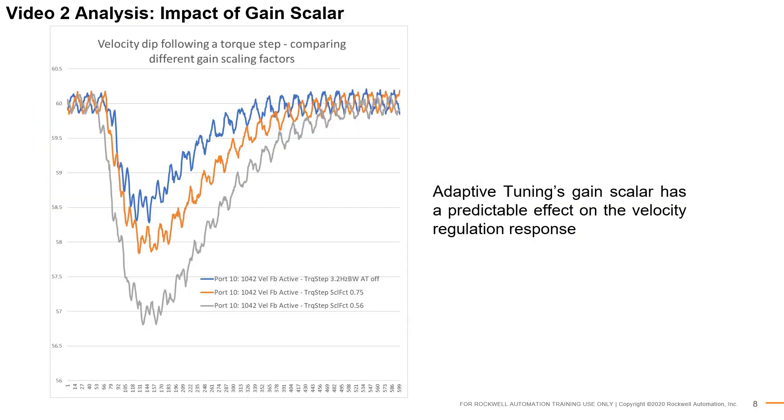We can observe the effects of the gain scalar by studying the velocity tracking performance in response to a torque load step. Once adaptive tuning updates the gain scalar, the value is retained and a load step is applied. In the comparisons below, we see the velocity dip resulting from the load step. The blue trace represents the system response when the gain scale is 1. Now let's look at the orange trace. When the gain scalar is detuned to 0.75, the effective system bandwidth is reduced. This results in a larger velocity dip and a longer settling time.